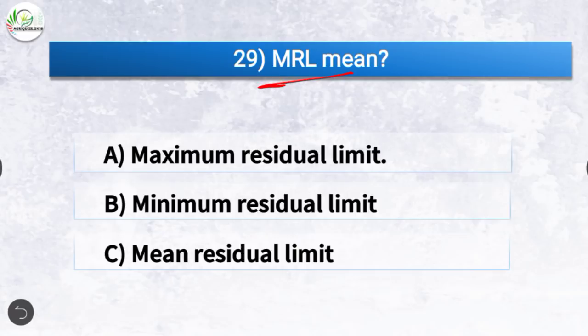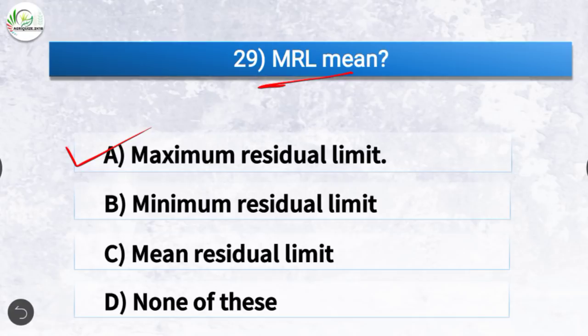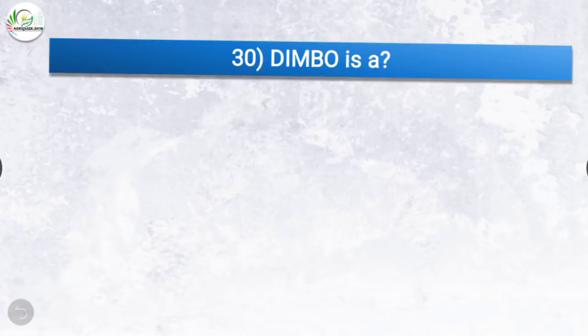Question number 29: MRL means? The correct answer is option A, maximum residual limit. MRL stands for maximum residual limit.